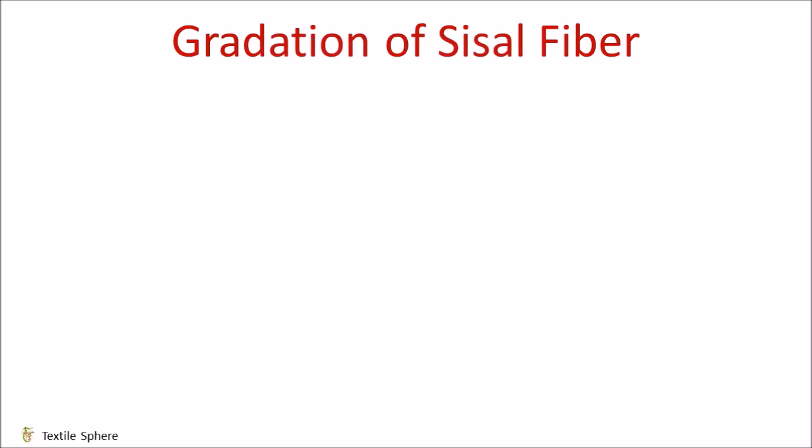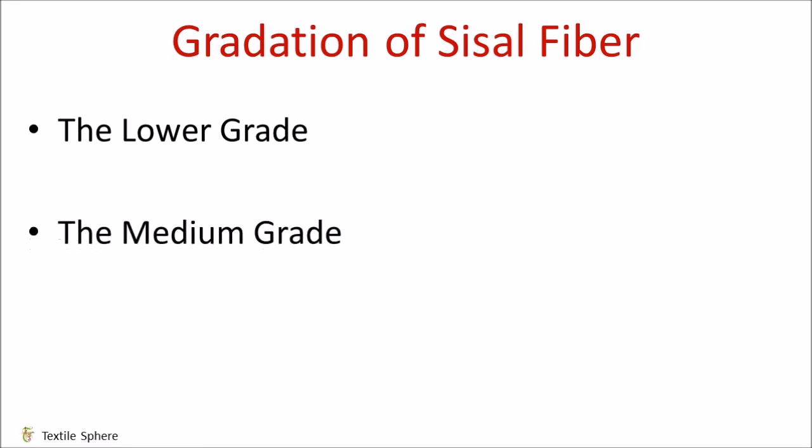Let's talk about gradation of sisal fiber. Sisal is used and graded by industries in three grades. The first one is the lower grade — high content of cellulose and hemicellulose, used in the paper industry. The next one is medium grade, used in the cordage industry for making ropes, balers and twines. Ropes and twines are used in marine, agricultural and general industrial use.